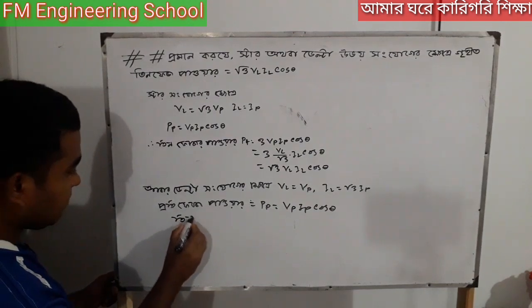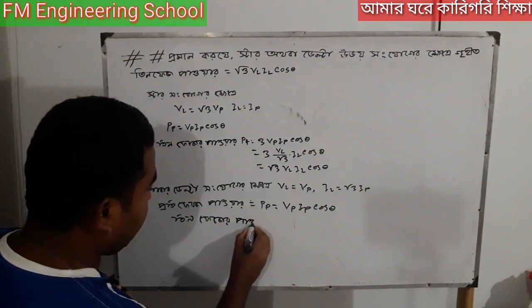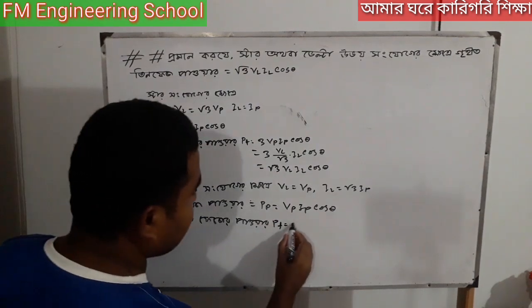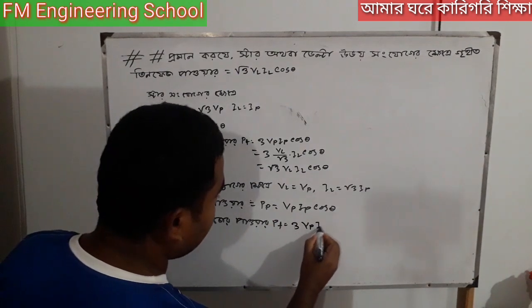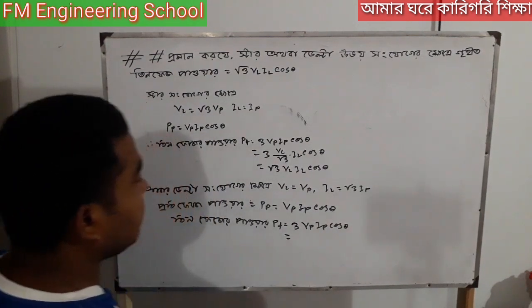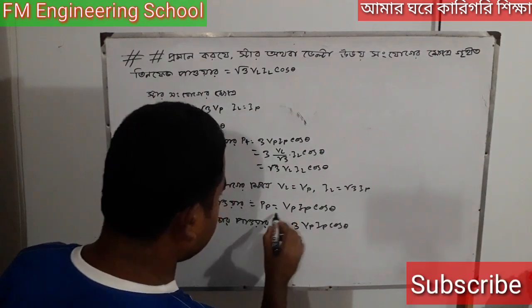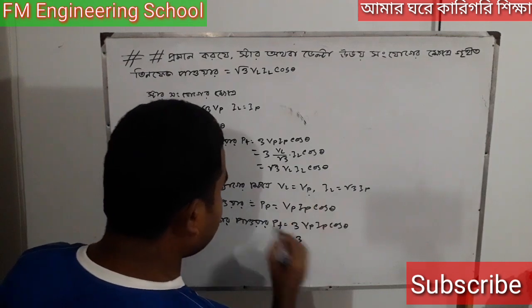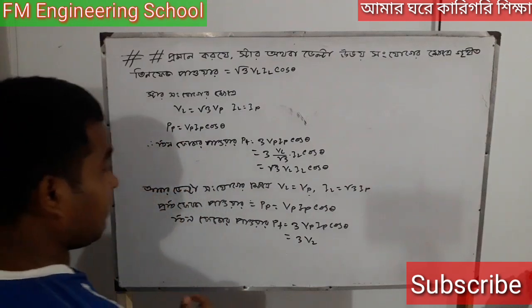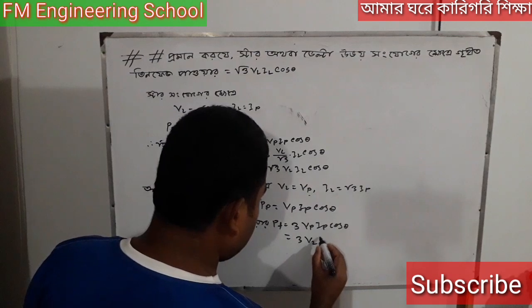So we have three-phase power. The total power PT equals 3 times VP times IP times cos theta. Since VP equals VL divided by root 3 and IL equals root 3 times IP, this simplifies. The total three-phase power PT equals root 3 times VL times IL times cos theta.